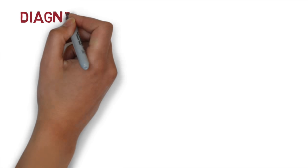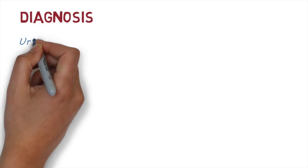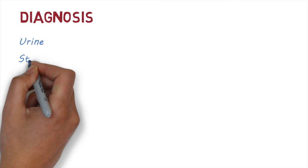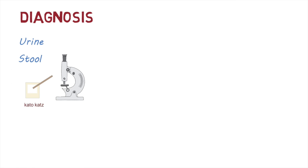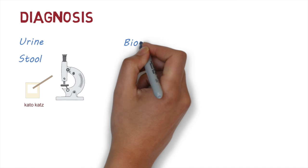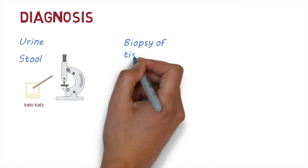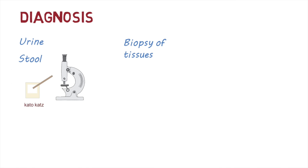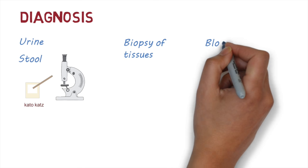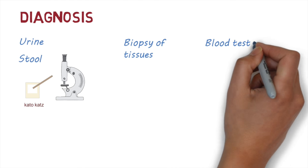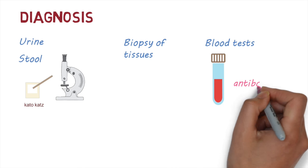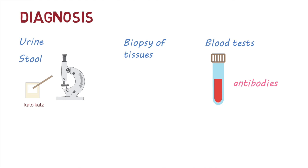How is the disease diagnosed? The disease can be diagnosed from the urine and stool using special techniques, or by biopsy of tissues and examining them under the microscope. There are also blood tests that can look for antibodies against the parasite.